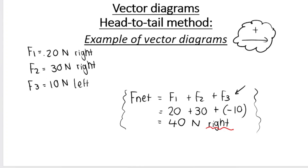Let's start with our first force vector: 20 Newton to the right. We draw an arrow pointing right and label it F1. Then F2, which is 30 Newton to the right — we place the tail of F2 at the head of F1, and it also points right. This is head-to-tail — that's why this method has this name.